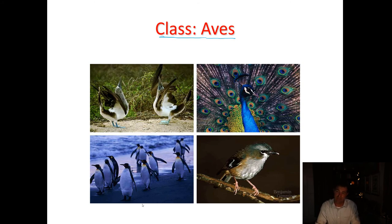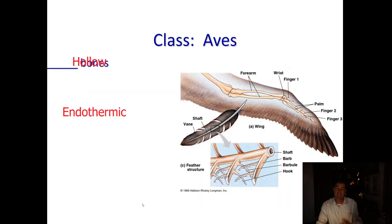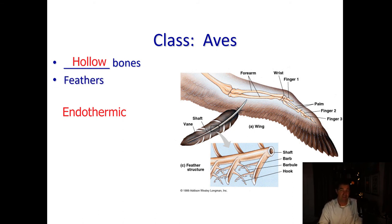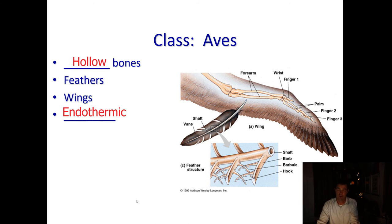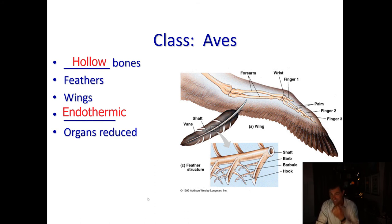Next, we have the class Aves — those are the birds. Birds typically have hollow bones that are honeycombed with spaces inside, making them lighter. They have feathers, wings, and they are endothermic, meaning they produce most of their own body heat through their metabolism — as mammals such as us do as well. They have reduced organs; they're missing a urinary bladder and tend to have one ovary. They're missing their teeth. All these are adaptations to make them lighter and help them fly.